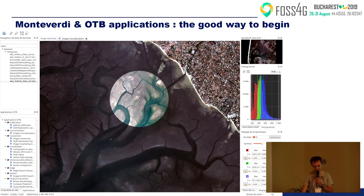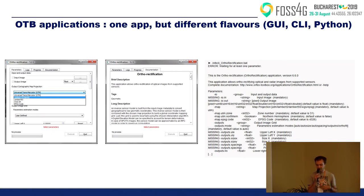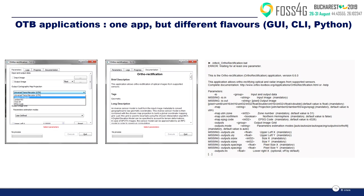Orfeo Toolbox applications — as I said, there are about 90 applications. The main principle is that for every application, we have three different interfaces that are generated automatically: one with a graphical interface, one command line interface, and also a Python interface — and we'll talk later about the Python interface because it's the main subject of this presentation. For every application you have a list of parameters, and the same parameters are found in every interface with the same name, which facilitates use of the toolbox.